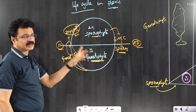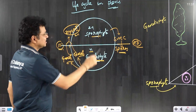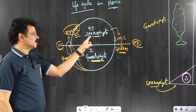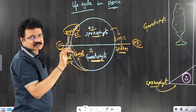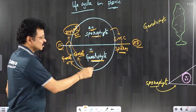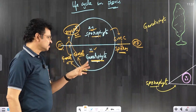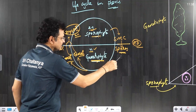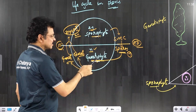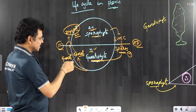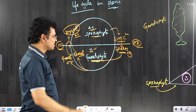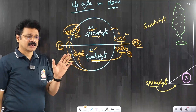Sporophyte always starts from a zygote — it is diploid because the zygote is diploid. Gametophyte is in haploid condition because the first cell for development of gametophyte is the haploid spore. The products of the gametophyte are gametes in haploid condition. One major product of the sporophyte is the spore mother cell in diploid condition. From these basic concepts, we can construct around eight questions.